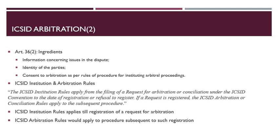As you would notice, Article 36 deals with contents of a request for arbitration. These are: information concerning issues in the dispute, identity of the parties, and consent to arbitration as per the rules of procedure for instituting arbitral proceedings. The ICSID has a set of rules known as institution rules, and there is also another set of rules known as ICSID arbitration rules. The introductory note to the ICSID institution rules states: the ICSID institution rules apply from the filing of a request for arbitration or conciliation under the ICSID convention to the date of registration or refusal to register. If a request is registered, the ICSID arbitration or conciliation rules apply to the subsequent procedure.